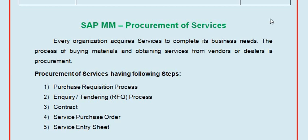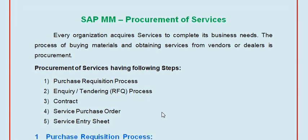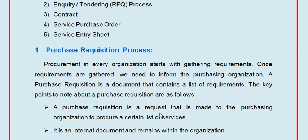The process of buying materials and obtaining services from vendors or dealers is procurement. Procurement of services has the following steps: first, purchase requisition process; then inquiry/tendering - request for quotation process; then contract; then service purchase order; then service entry sheet; then invoice verification; and vendor ongoing payments.